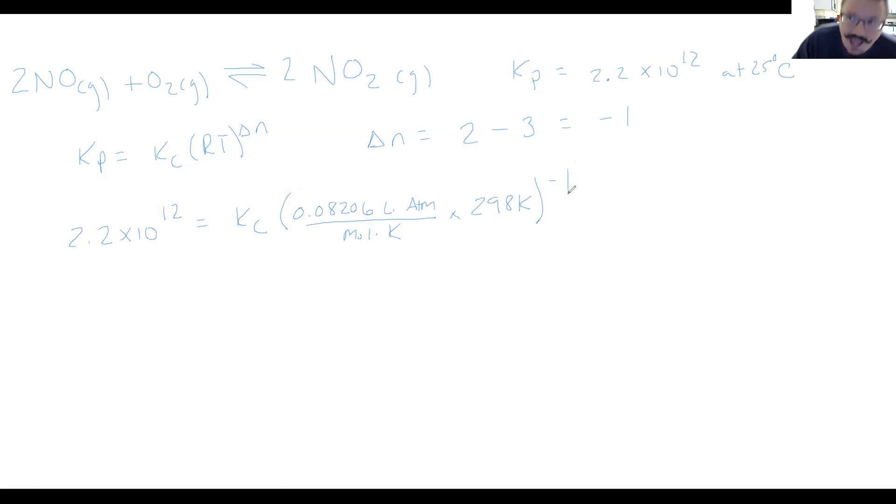Now that's not the same thing as saying one times 10 to the negative one. This is actually bringing it to that power. And if it's a negative power, it's essentially the same thing as putting it on the bottom, saying this times this is the same thing as this raised to the negative one power. So we are going to have 2.2 times 10 to the 12 equals KC times one over that. Let's go ahead and carry that out and see what the actual value is. So I don't have to write quite as many numbers.